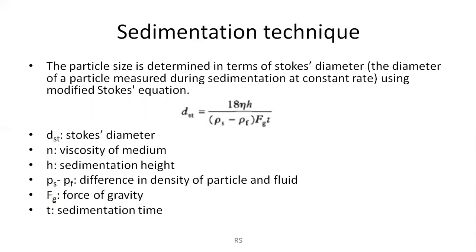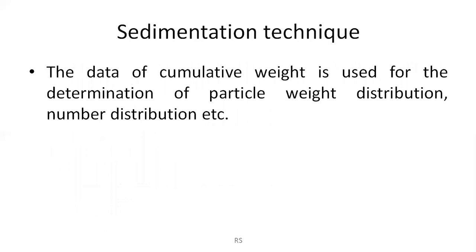The diameter of a particle can be measured during sedimentation at a constant rate using this modified Stokes equation: D_ST = √(18ηH / (ρ_S − ρ_F) · g · t), where D_ST is the Stokes diameter, η is the viscosity of the medium, H is the sedimentation height, ρ_S minus ρ_F is the difference in density of the particle and the fluid, g is the force of gravity, and t is the sedimentation time. The cumulative weight data is used for further determination of particle weight distribution and number distribution.